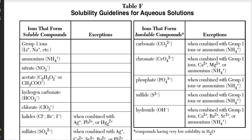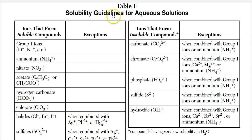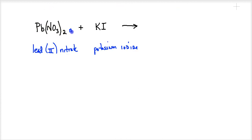Table F gives us our solubility guidelines. Lead(II) nitrate is Pb(NO₃)₂. Looking at the table, nitrate, NO₃⁻, falls under the soluble area — anything with a nitrate is soluble. You have 4 atoms sharing a negative 1 charge, so that charge is stretched out and weak, meaning water can break apart the solid. Since nitrate is soluble, lead(II) nitrate is soluble, which means it dissolves as ions — we write aqueous.